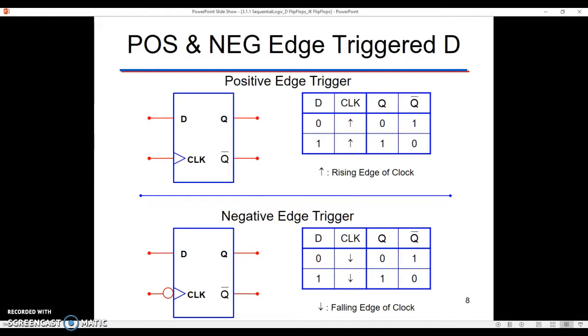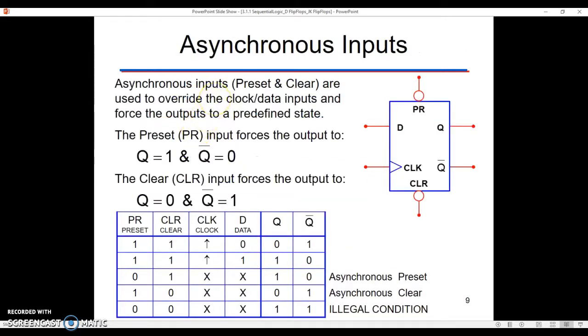So let's shift gears and talk about the asynchronous inputs. Asynchronous inputs, and you'll probably want to pause and write this stuff down and then unpause. So I'll wait for you to do that. Now that you have all this written down, what we're talking about are the PR and CLR inputs that you see at the top and bottom. Those weren't there before. PR stands for preset.